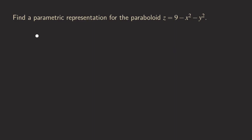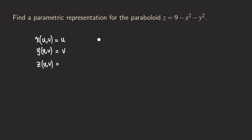So let's write this down. We're going to write down x, y, and z. Our x is one of the parameters, so we call it u, and the other one is y, which we call v. Now z is actually dependent on x and y. So if we plug u into x and plug v into y, we get z equals 9 minus x squared minus y squared. Plugging in, we get 9 minus u squared minus v squared. So our z would be 9 minus u squared minus v squared.